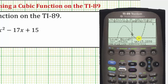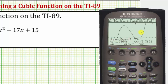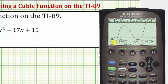We can determine the relative minimum using option three and the relative maximum using option four. Let's press three for minimum. It's asking for the lower bound, which means you want to place the cursor to the left of this relative minimum. Let's press the right arrow to place the cursor there, press enter, then press the right arrow again for the upper bound, moving the cursor to the right of the relative minimum. Press enter. The approximate coordinates of the relative minimum are two comma negative seven.